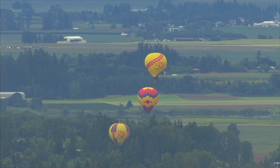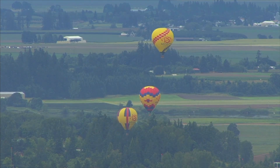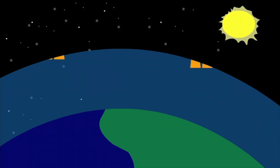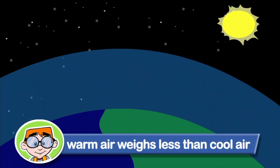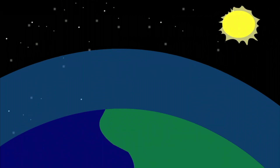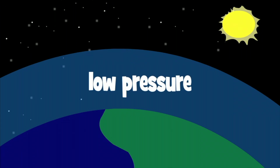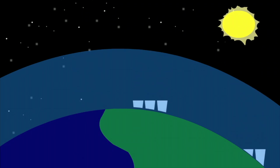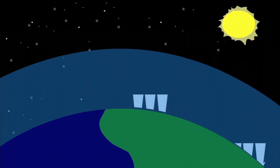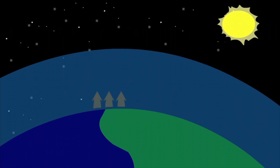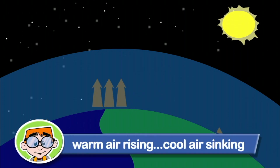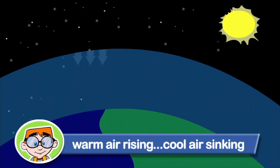The uneven heating of the air in the atmosphere causes the air to move! Here's why! The sun heats up the Earth's surface! That warms up the air in the atmosphere! Warm air weighs less than cool air! The warm air rises or moves up! When the warm air moves up, it leaves an area of low pressure! Then the cool air, which weighs more than the warm air, sinks or moves down and replaces the warm air! Now, as the warm air moves up, it cools off, then begins to sink! This movement of air — warm air rising, cool air sinking — is what makes the wind blow!